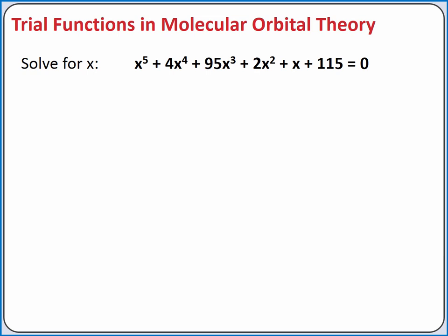Imagine you wanted to solve this equation for x. You may not know how to get the exact answer using algebra, but you could use the method of successive approximations. In successive approximations, you guess what the answer is — if you're wrong, you guess again. So you might start by guessing the answer is 1.